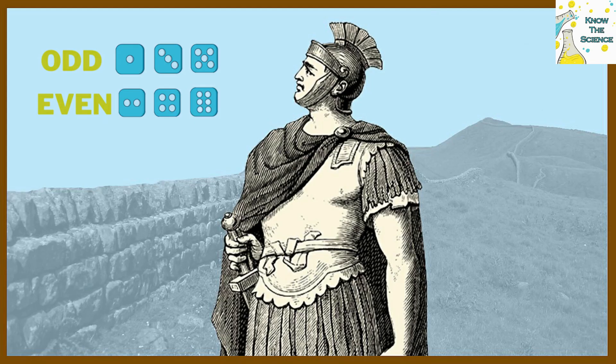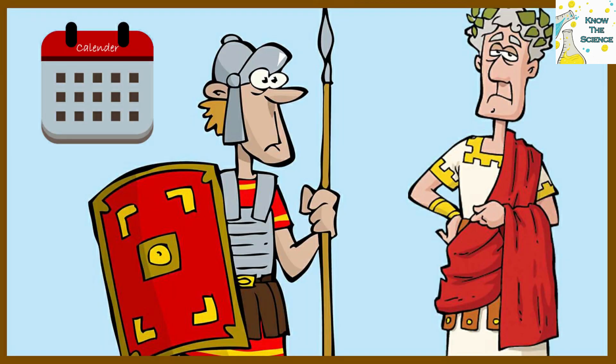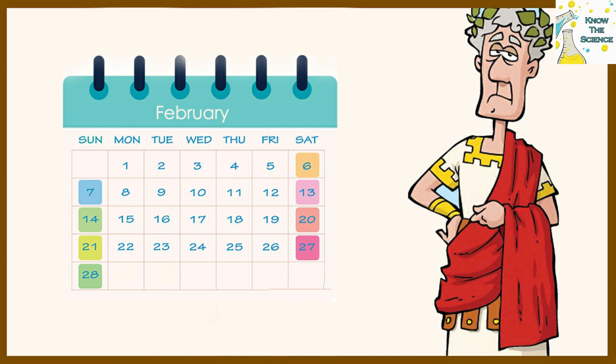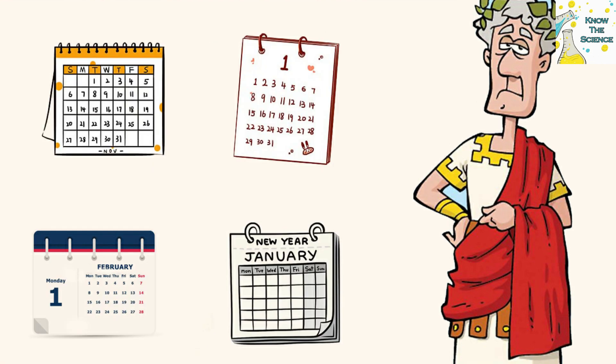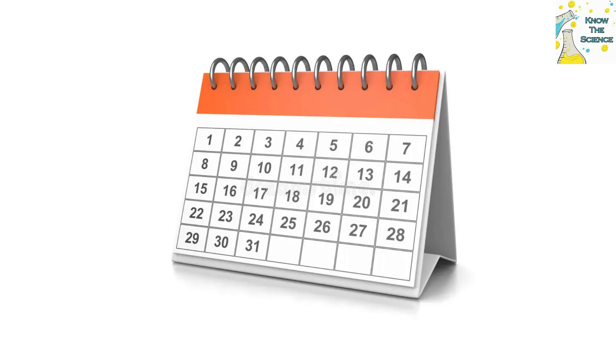Romans believed even numbers to be unlucky. Each month had an odd number of days, alternating between 29 and 31, but in order to reach 355 days, one month had to be an even number. February was chosen to be that unlucky month with 28 days. Despite subsequent changes to the calendar — including the shortening of February at certain intervals, the addition of a leap month, and eventually the modern leap day — February's 28-day length has stuck.